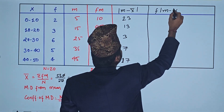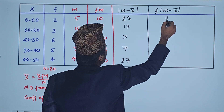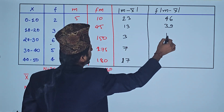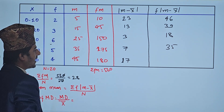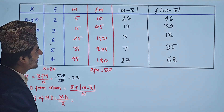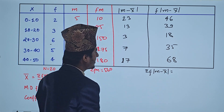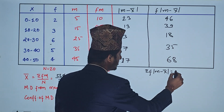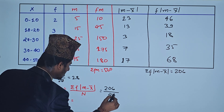Now multiplying f × |m − x̄|: 2 × 23 = 46, 3 × 13 = 39, 6 × 3 = 18, 5 × 7 = 35, 4 × 17 = 68. Summation of f×|m − x̄| = 46 + 39 + 18 + 35 + 68 = 206.